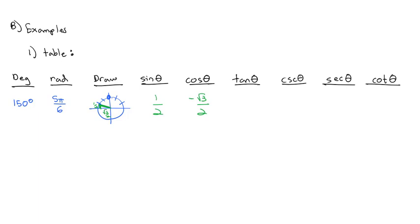For the tangent, we take y divided by x: 1/2 divided by negative root 3 over 2. The divide-by-2s on top and bottom cancel out, so we just rationalize the denominator by multiplying by root 3 over 3, giving us negative root 3 over 3 for the tangent.